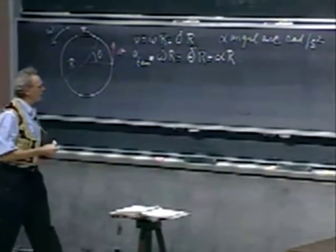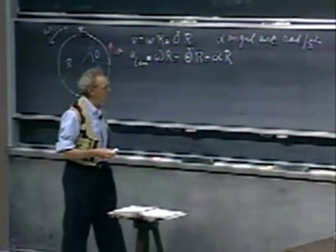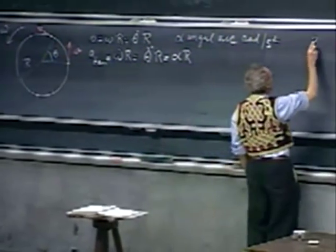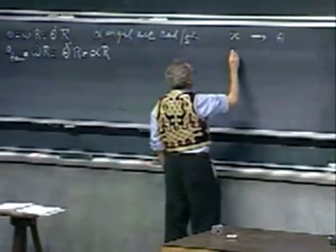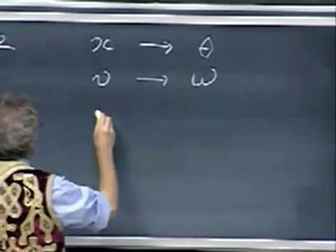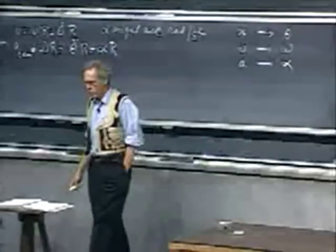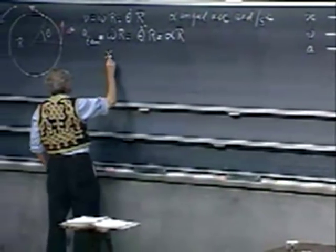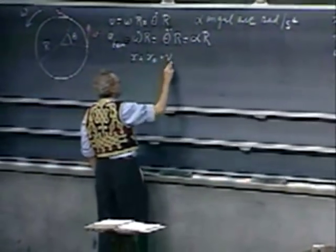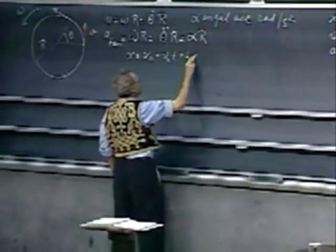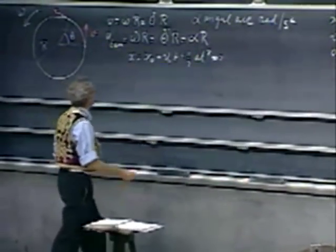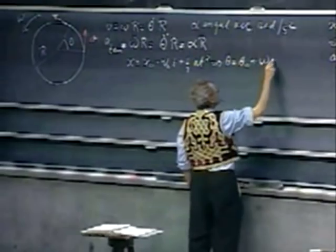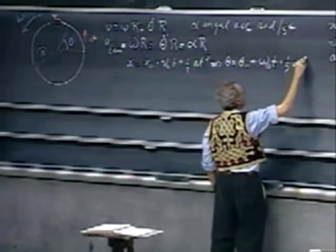If we compare our knowledge of linear motion and want to transfer it to circular motion, you can use all your equations from the past if you convert x to theta, v to omega, and a to alpha. For instance, x = x₀ + v₀t + ½at² simply becomes, for circular motion, theta = theta₀ + omega₀·t + ½·alpha·t².